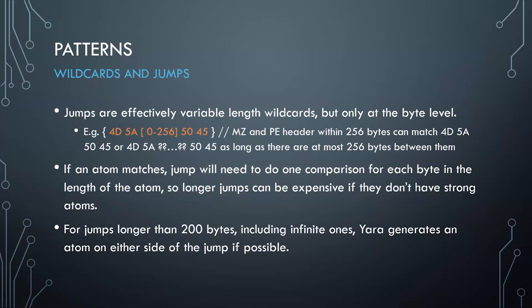For jumps longer than 200 bytes, there will be an atom on either side of the jump so YARA can search from either side more efficiently. If the jump is 200 bytes or smaller, it uses the atom from the beginning of the jump and does the comparison straight from there.